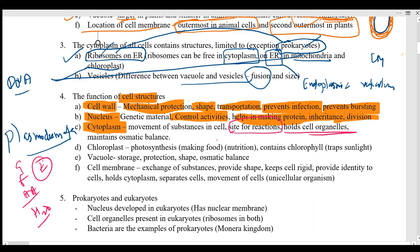Another function of the cytoplasm is that it holds the cell organelles together and maintains the osmotic balance — meaning the amount of water inside and outside the cell should be equal so that better processing can take place inside the cell. The chloroplast helps in the process of photosynthesis, which is the process of food making or plant nutrition.